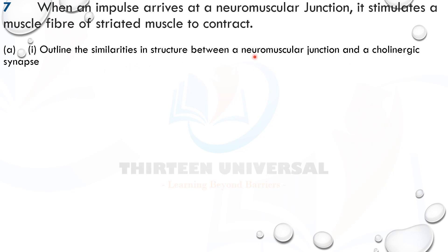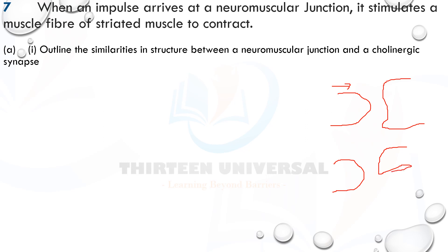The question asks: outline the similarities in structure between a neuromuscular junction and a cholinergic synapse. Pause the video and try to solve it. A cholinergic synapse is where two neurons meet. A neuromuscular junction is where a motor neuron meets a muscle fiber. We are looking at the similarities between these two structures.